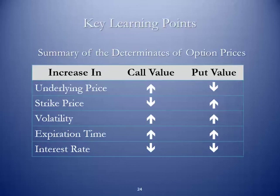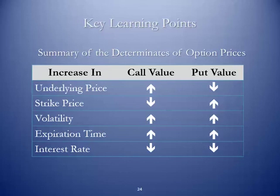The risk or exposure by the writers of the options is going to increase with volatility. Time to expiration: the further out from the time you enter into the options contract until expiration, both the put value and the call value could also increase. And then interest rates: if there's an increase in the interest rate, both the call value and the put value are going to decline.